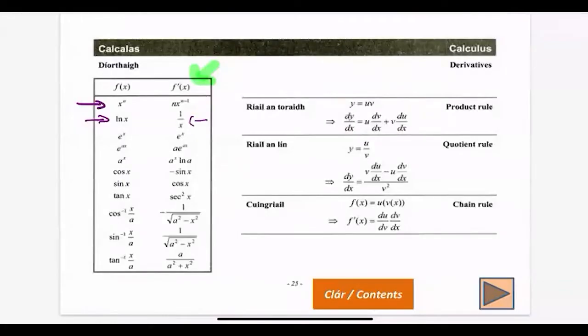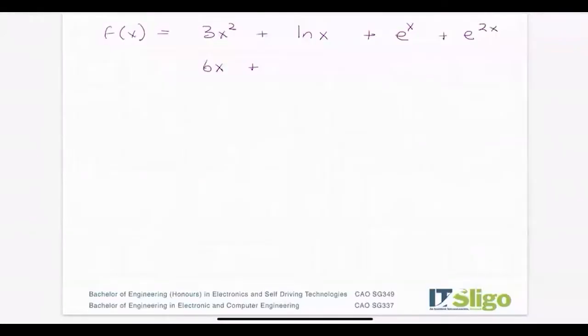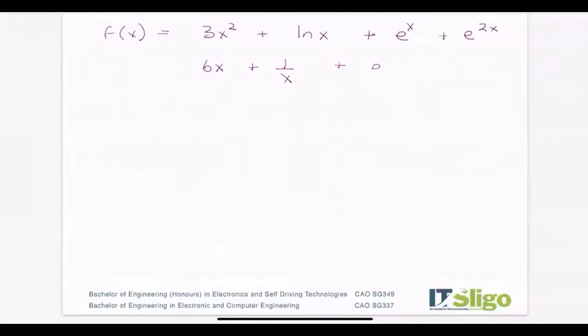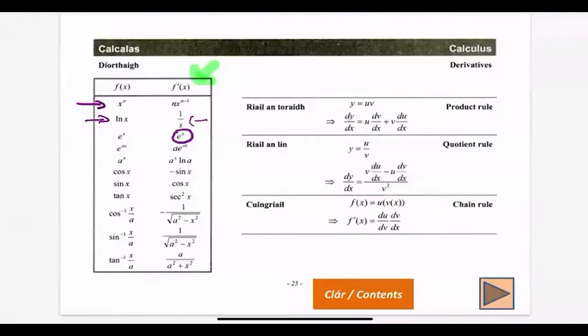For e^(ax), the coefficient a comes down in front. Since a is 2, the 2 comes down and we get 2e^(2x).